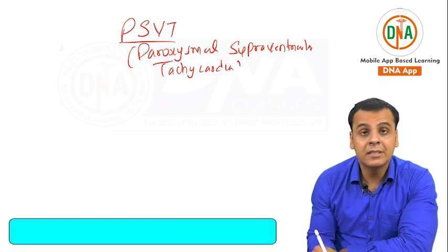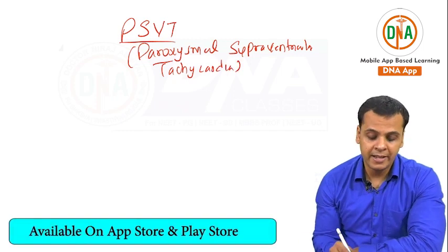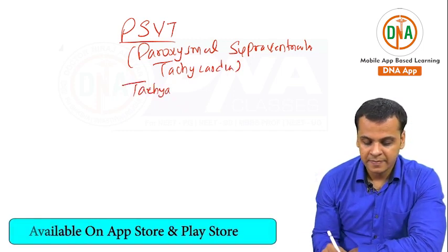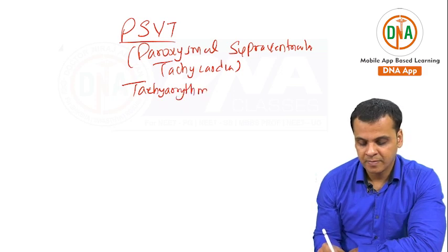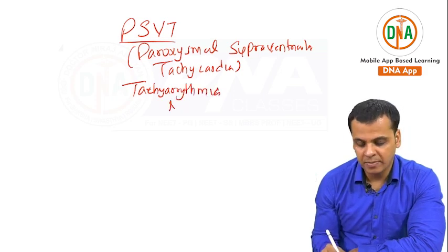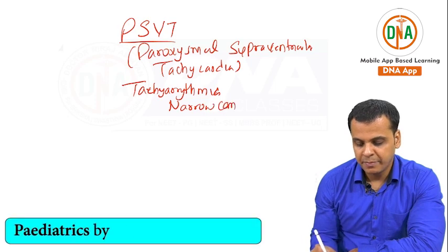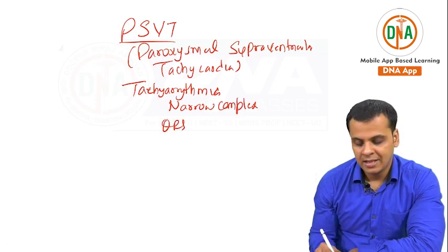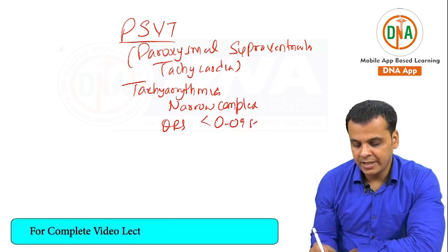PSVT is a type of tachyarrhythmia which is narrow complex, meaning the QRS duration is less than 0.09 seconds.